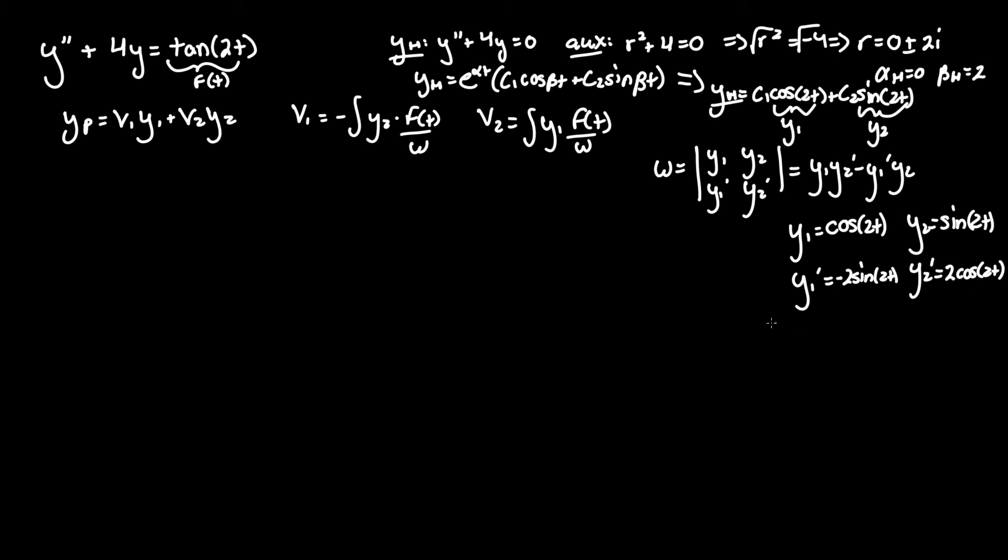So now we take this Wronskian value this will take a little bit of space and we plug in all our values here. So y1 is cosine 2t. I'll remove the parentheses to shorten it and y2 prime is 2 cosine 2t. Subtracting that by y1 prime negative 2 sine 2t times y2 sine 2t you can tell that this turns into a future trig function where it's 2 cosine squared of 2t plus 2 sine squared of 2t.